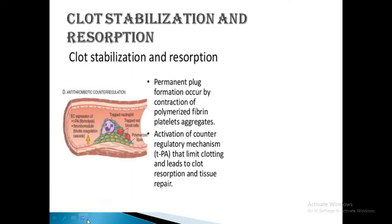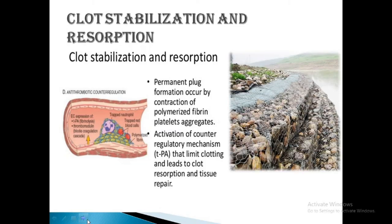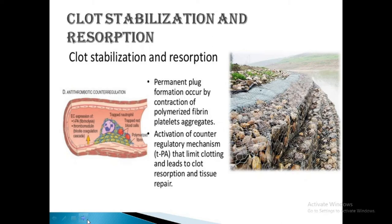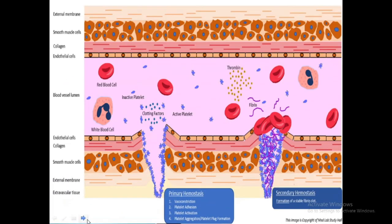Now let's come to the last point, which is clot stabilization. It is the process in which there is polymerization of fibrin and platelet aggregation, which undergo contraction to form a solid permanent plug, hence stopping the hemorrhage. At this stage, counter-regulatory mechanisms — for example, tissue plasminogen activator (TPA) — are set into motion, that limit clotting to the site of injury and eventually lead to clot resorption and tissue repair.